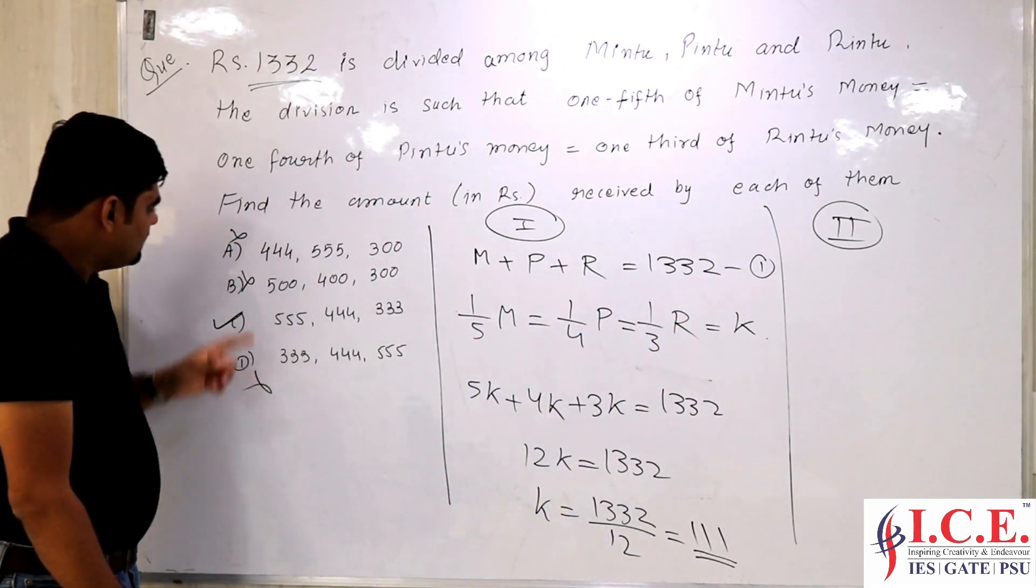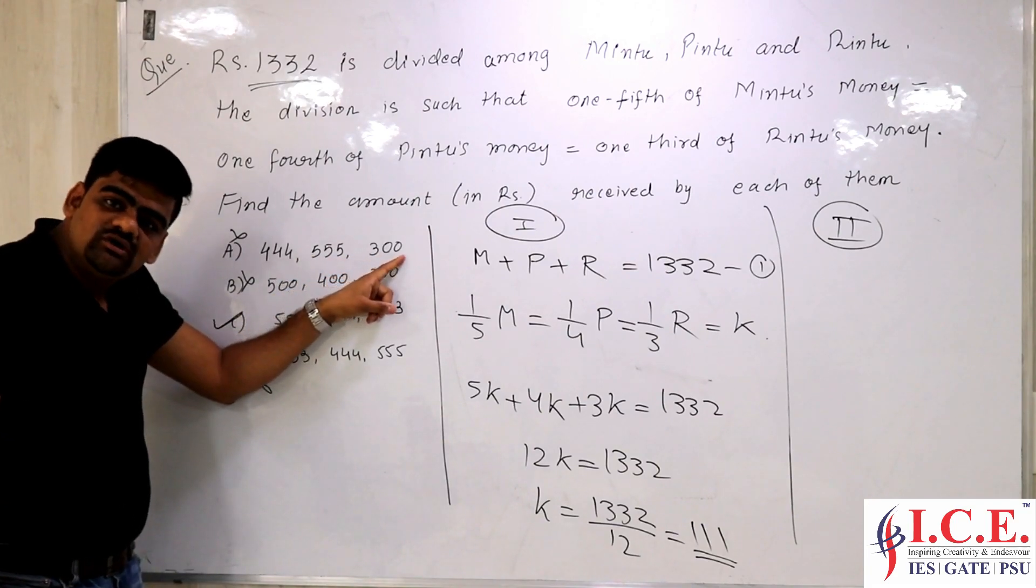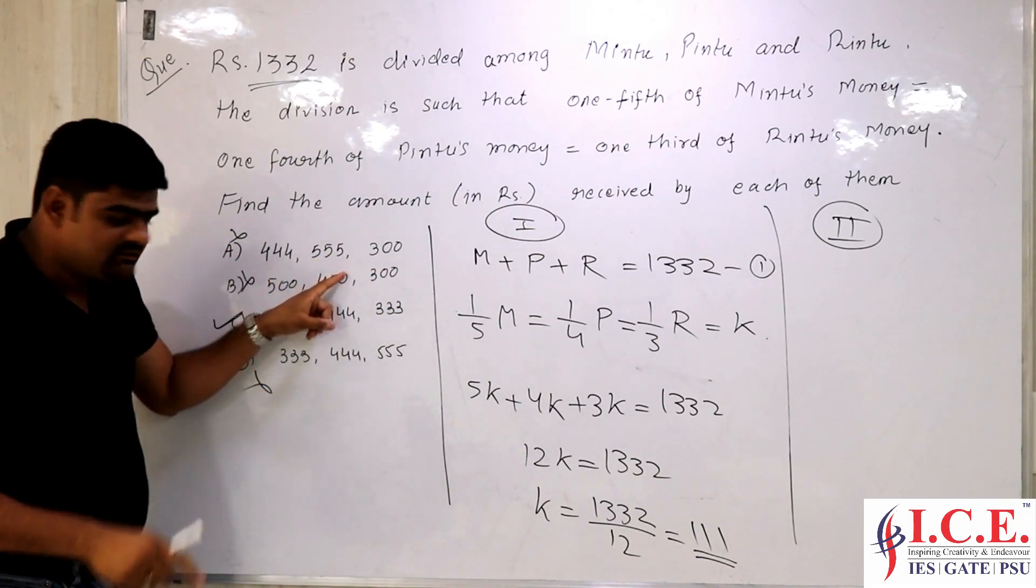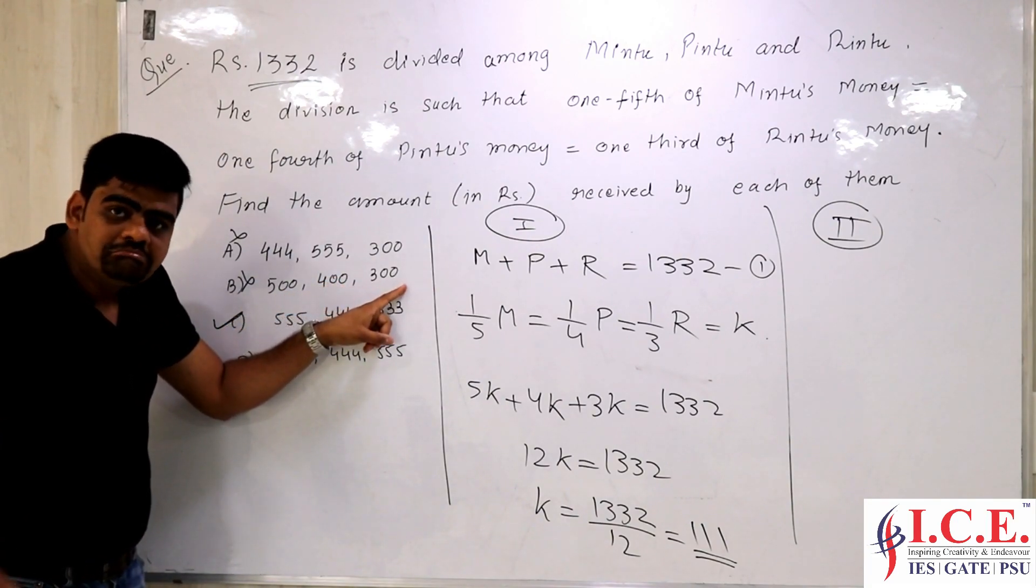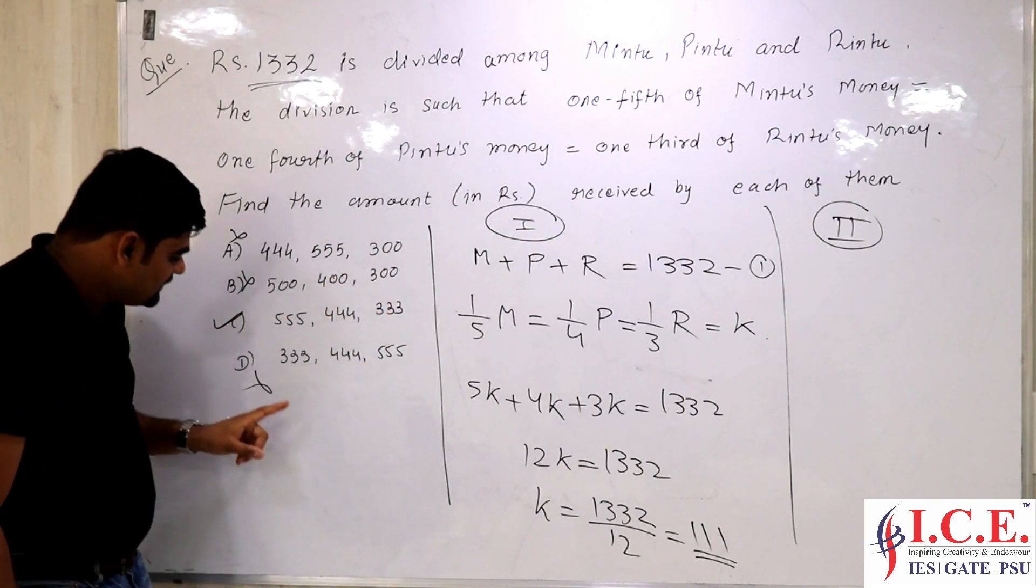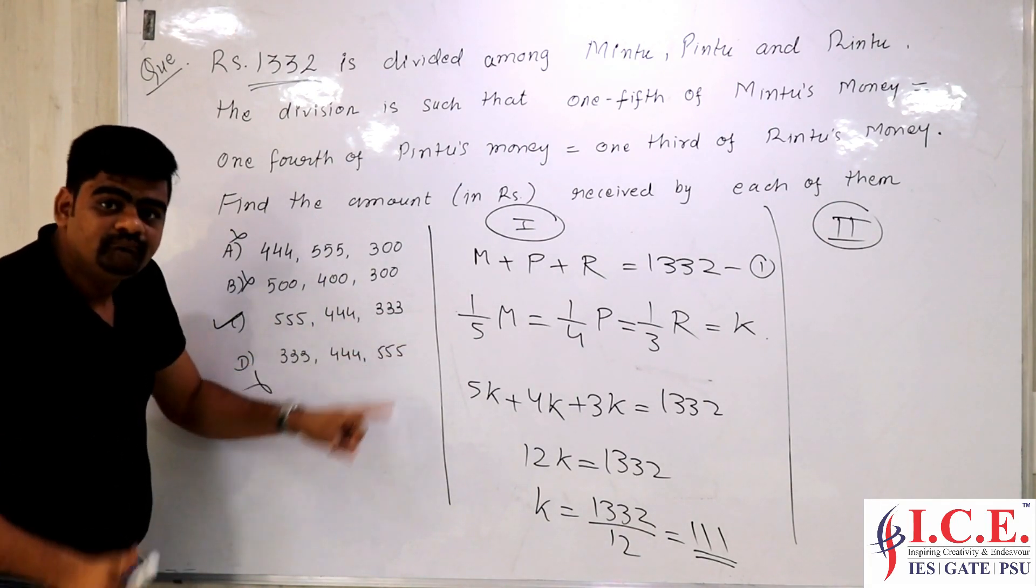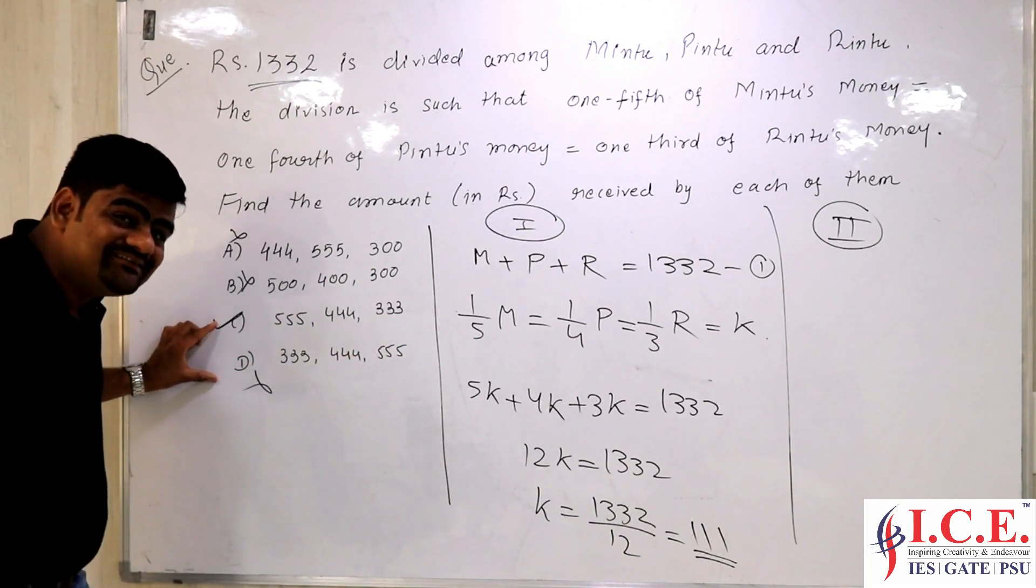Is the last digit in this question going to be 2? No. Last digit is going to be 9. Reject it. Is this last digit going to be 2? No. Reject it. Is the last digit going to be 2? Yes. Is the last digit going to be 2? Yes. That means the answer can be either C or D.